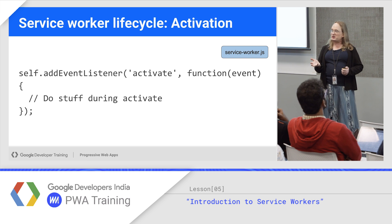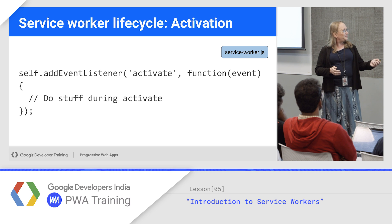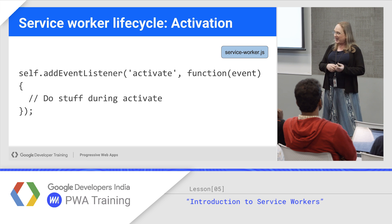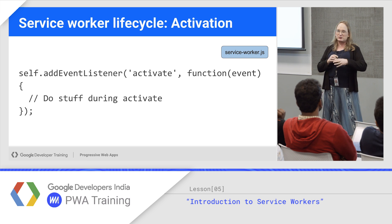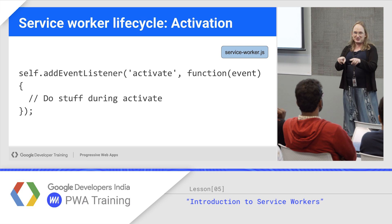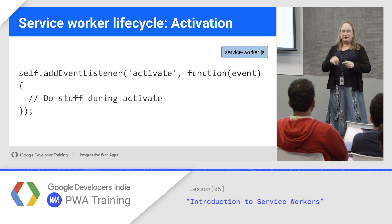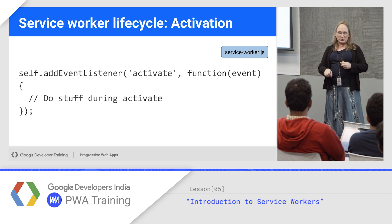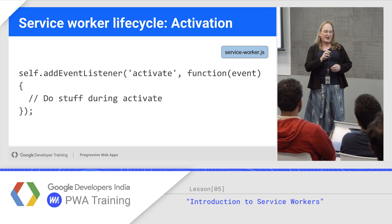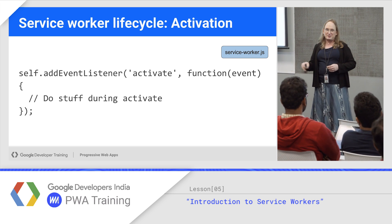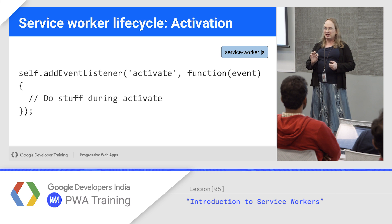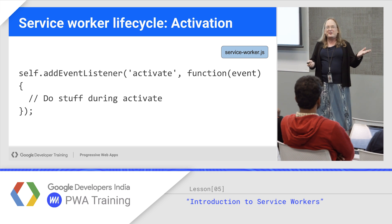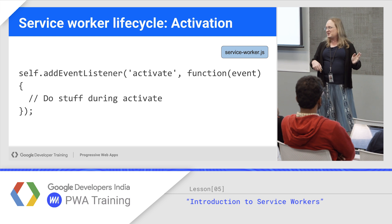The activate event happens when the service worker actually takes control. Cache maintenance normally happens during activate. For example, when you revise your service worker to version two, version two builds its own cache. During activate, version two knows it's the only service worker in control, so it can remove the version one cache. Do not do cache maintenance during install, because there may be more than one service worker depending on that cache — also because some versions of Chrome will crash if you take the cache out during install.